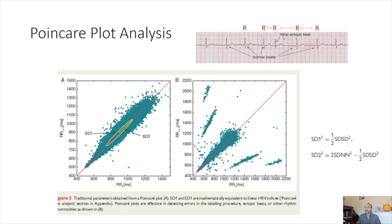You normally have these normal beats with a usual RR interval, but when you have an ectopic atrial beat, you have a short RR followed by a long RR interval. So the short RR may be mapped out in one region, then followed by a larger RR interval, allowing you to see these possible ectopic beats plotted in specific regions. In truth, SD1 and SD2 can be derived using just simple time domain measures — SD1 squared equals one half of the standard deviation squared, and SD2 can similarly be derived using time domain measures, so you do not necessarily have to plot these graphs to obtain SD1 or SD2.